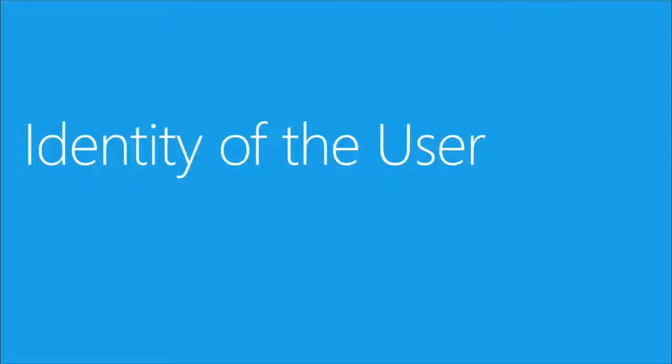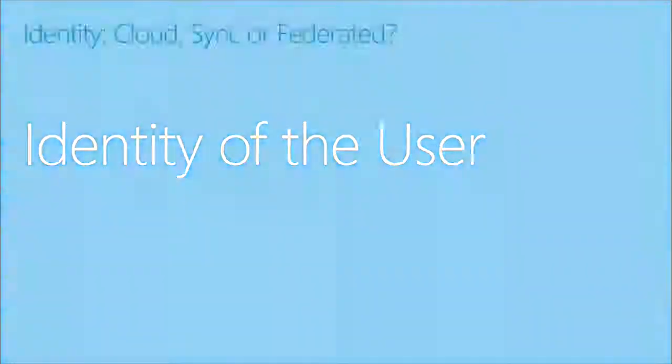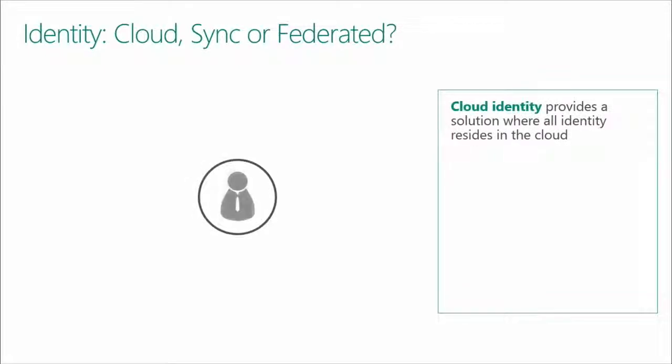Let's talk about the identity of the user — what it means to understand who that user is and where they're coming from. As shown in the demonstration earlier, we have the notion of synchronization that is important for this to happen. We also have the ability to create identities in the cloud natively, as well as the ability to federate a relationship. So we'll lay some of the groundwork for what we're talking about here.